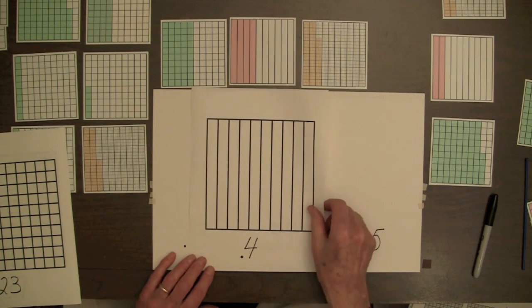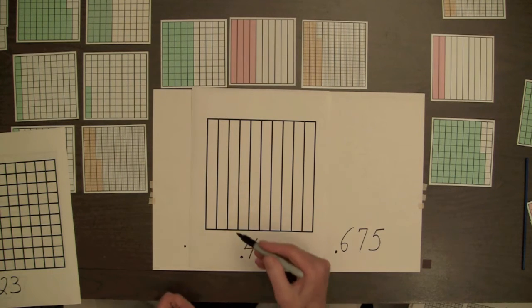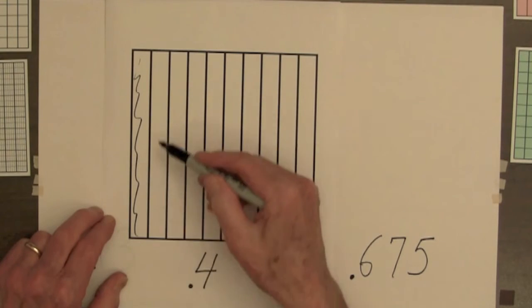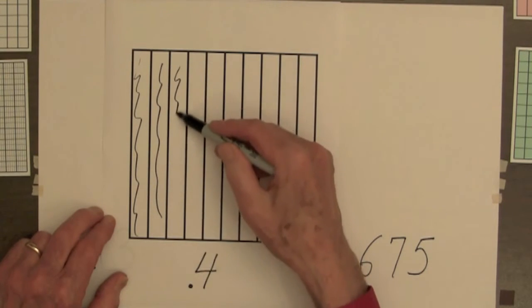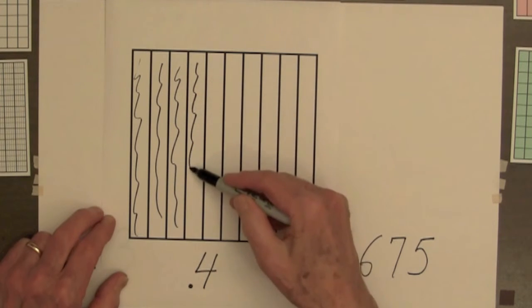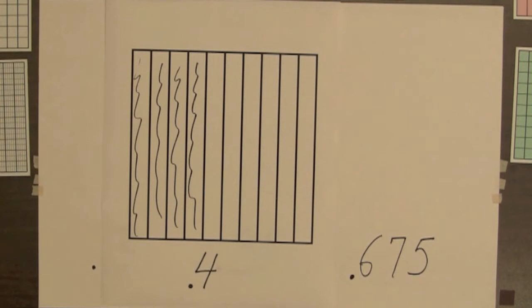For this square, they would shade 4 columns for the decimal point 4.